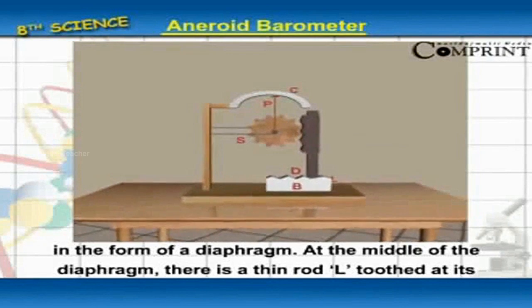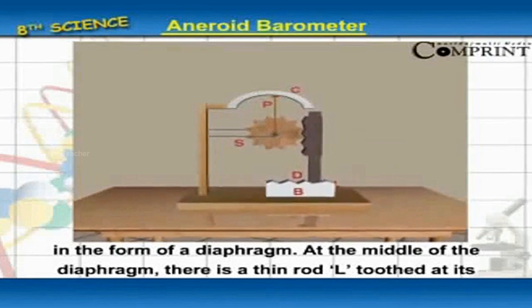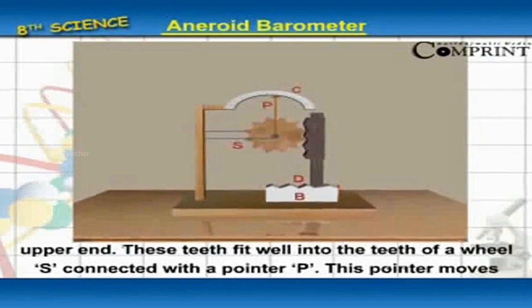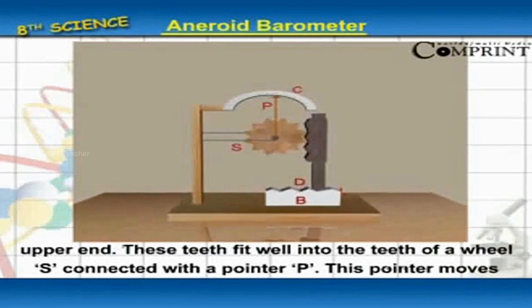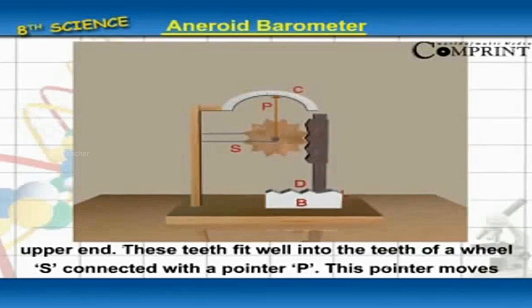At the middle of the diaphragm there is a thin rod L toothed at its upper end. These teeth fit well into the teeth of the wheel S connected with the pointer P.